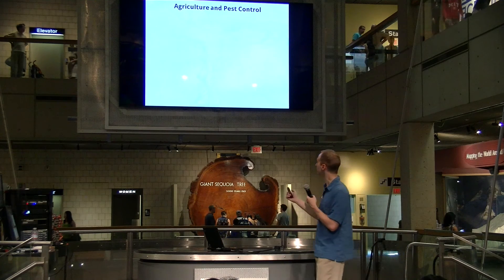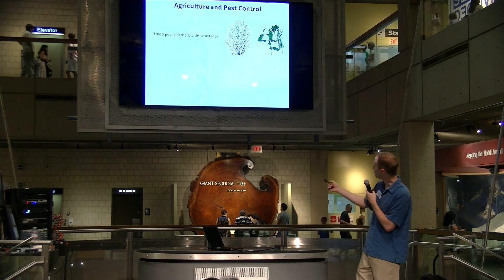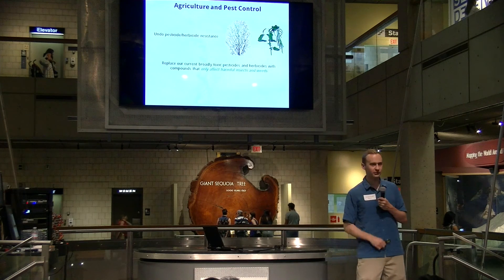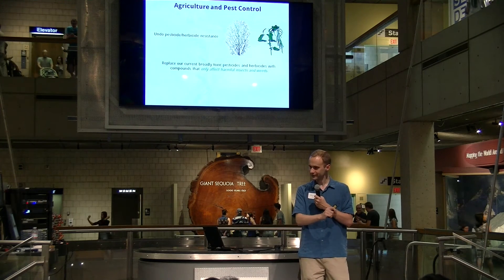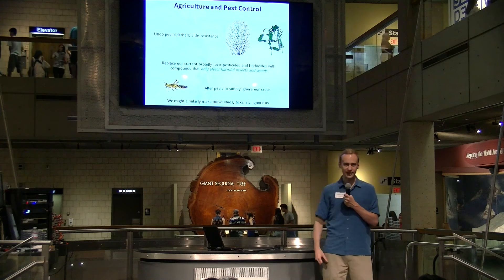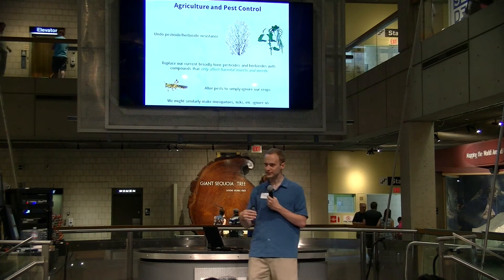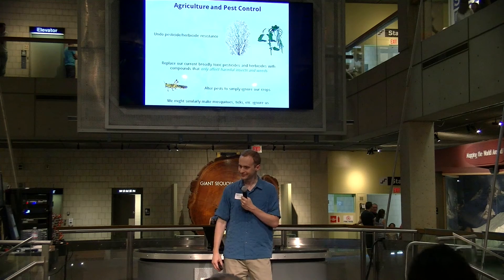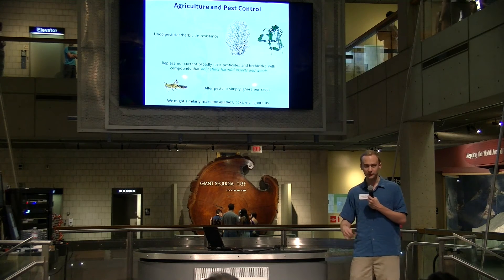For agriculture and pest control: we might undo pesticide and herbicide resistance in weeds, which is becoming more and more of a problem. We might replace broadly toxic pesticides and herbicides with compounds only toxic to a particular pest species we've altered with a gene drive, so it wouldn't affect anything else. We might alter pests to simply ignore our crops, or eventually engineer mosquitoes and ticks so they didn't like the smell and taste of us — let nature be and just ignore us. That's probably the most elegant solution.